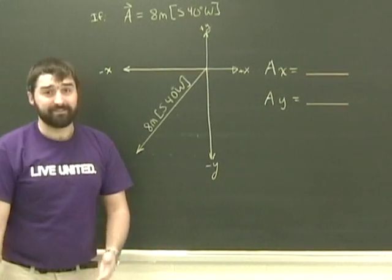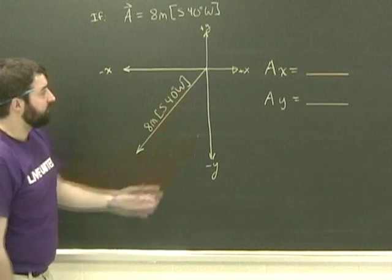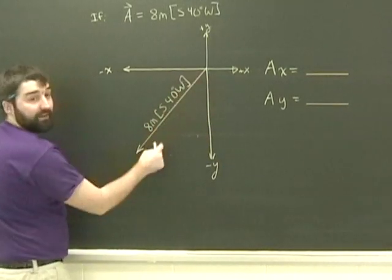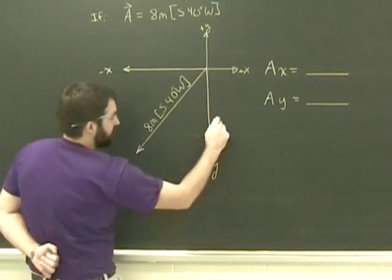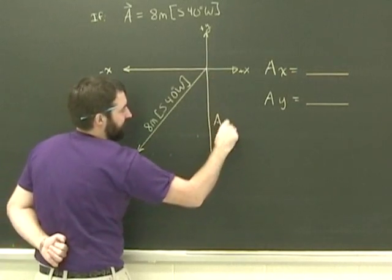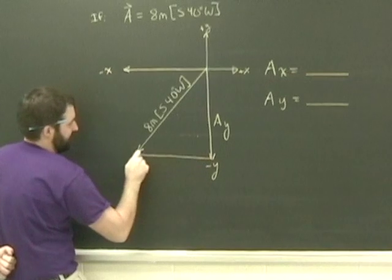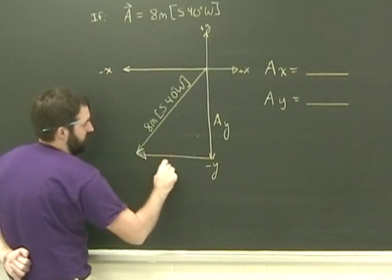Other than that, it's basically exactly the same. As always, the x component and the y component have to add up to the entire vector, so we've got, basically perfectly drawn here, Ay plus Ax.